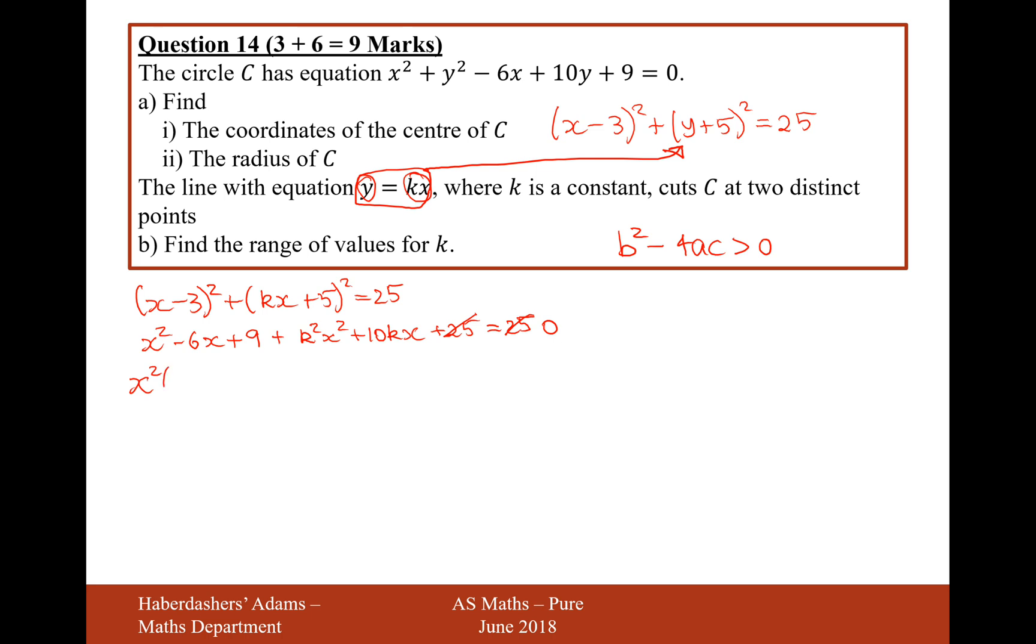For x squared, we have 1 at the start and we have k squared in this term here. Then, for x, we're going to have minus 6 here and then plus 10k here. That will all be the multiple of x. We've got the multiple of x at the front there. And then, plus 9 will be the only c term in this equation here. Therefore, when we now use the discriminants, this is going to be the value for a, this is going to be the value for b, and this is going to be the value for c.